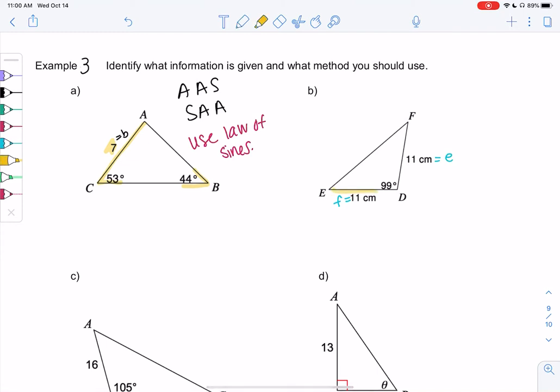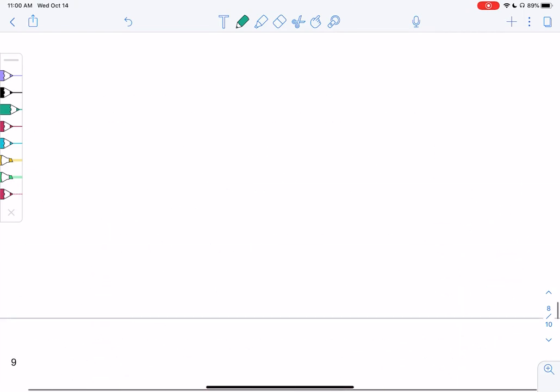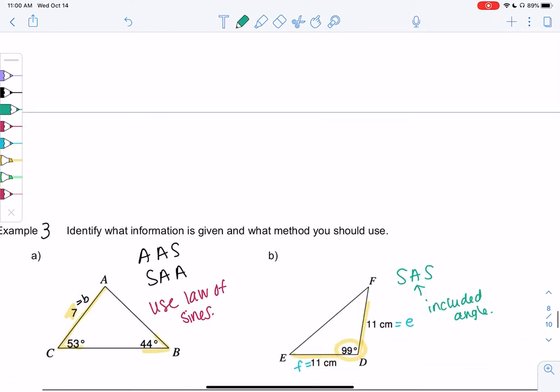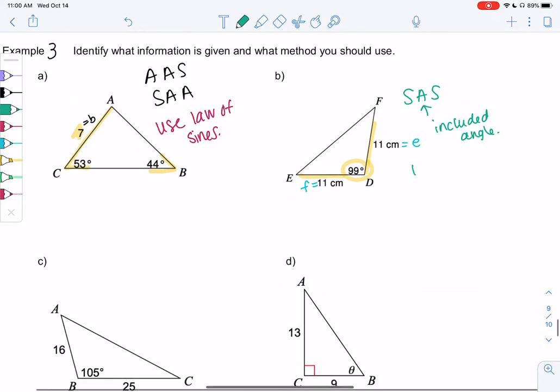So in this case, we know side, angle, side (SAS). We know the included angle. So let's see. That was law of cosines. And you can try to use law of sines. It's not going to work. So I'm saving you the trouble of making mistakes and using the wrong method. So use law of cosines.